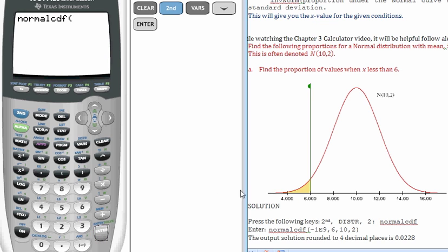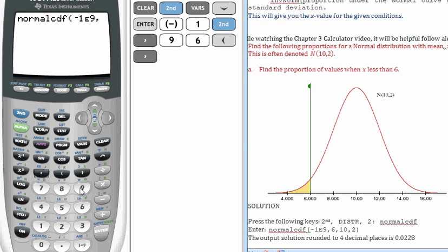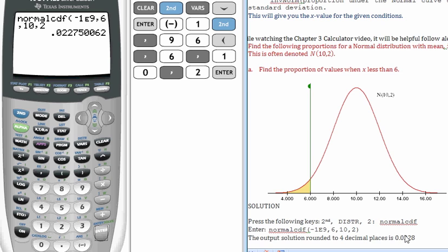I'm looking to find the values from negative infinity up to 6. The calculator does not have an infinity key, so as an alternate, I do negative 1 times 10 to the exponent of 9 power. There's a paragraph just above this problem about why we do this. And then that goes to 6, so I do a comma, 6, standard deviation—excuse me, mean of 10, a standard deviation of 2, and I hit enter. And that's the correct solution. So the solution here is 0.0228.